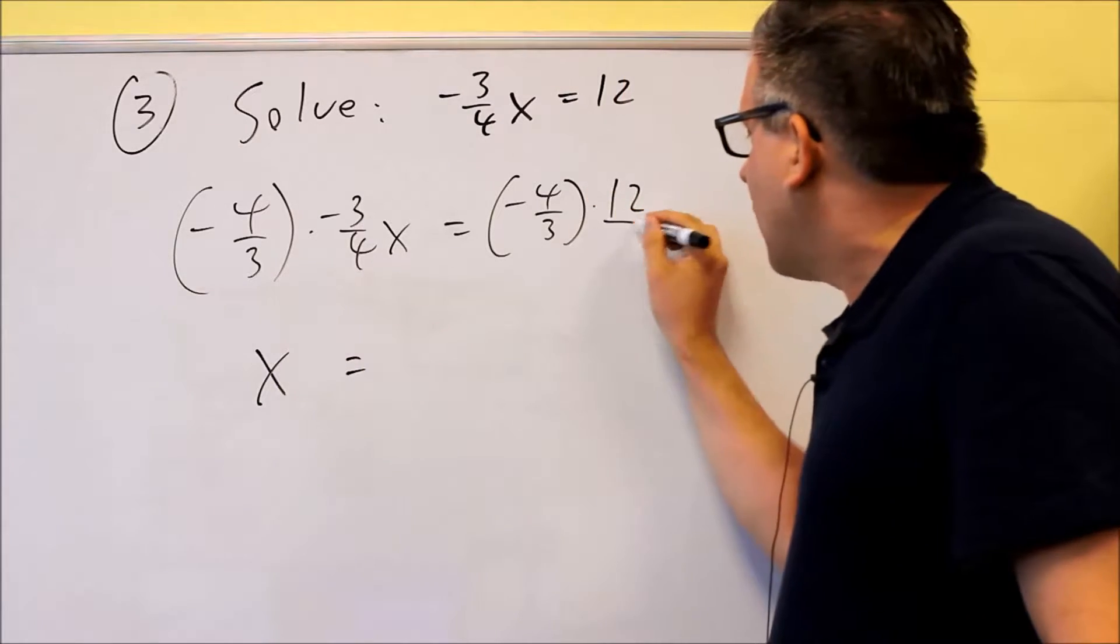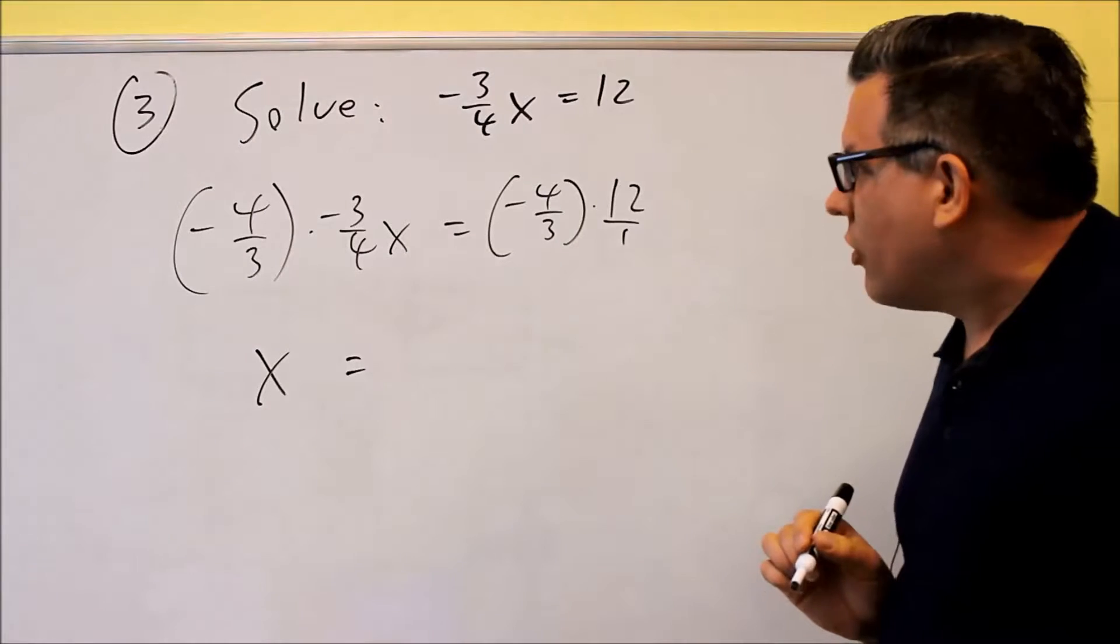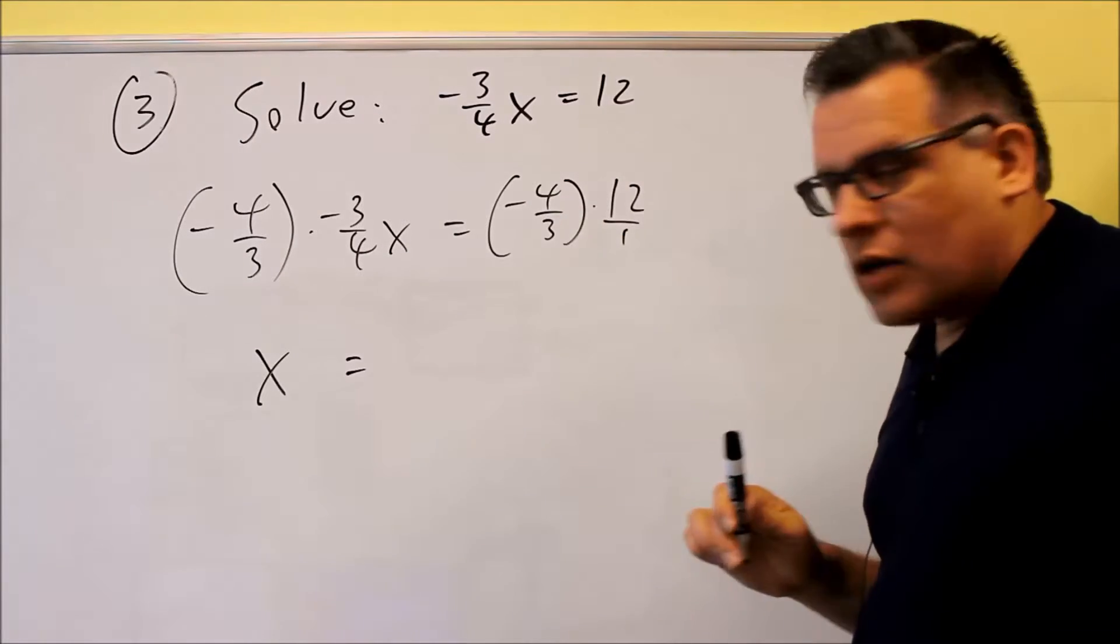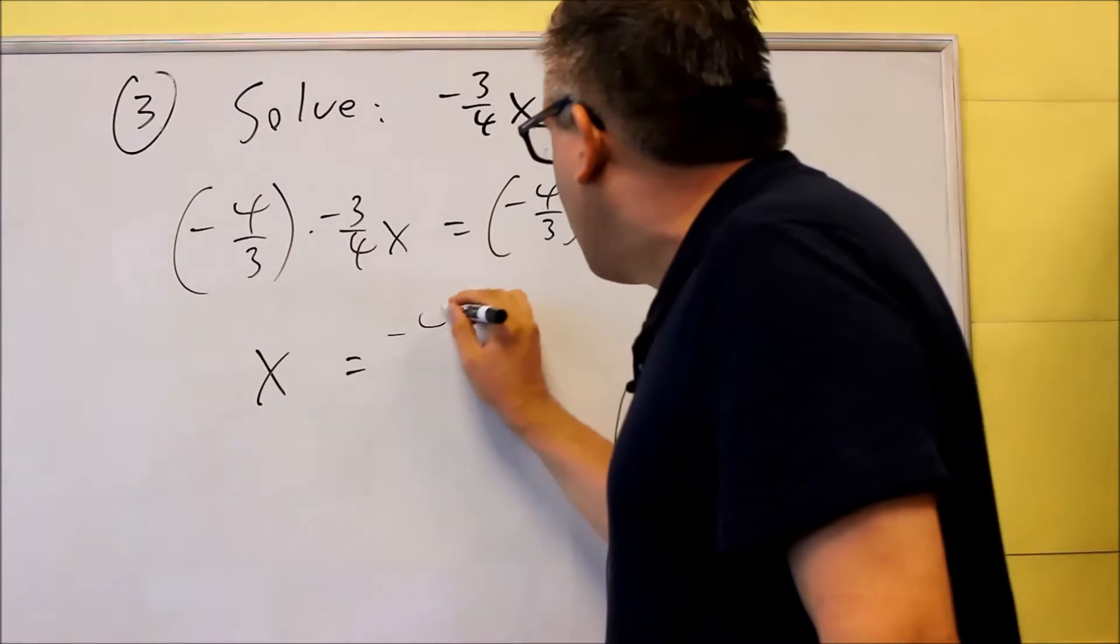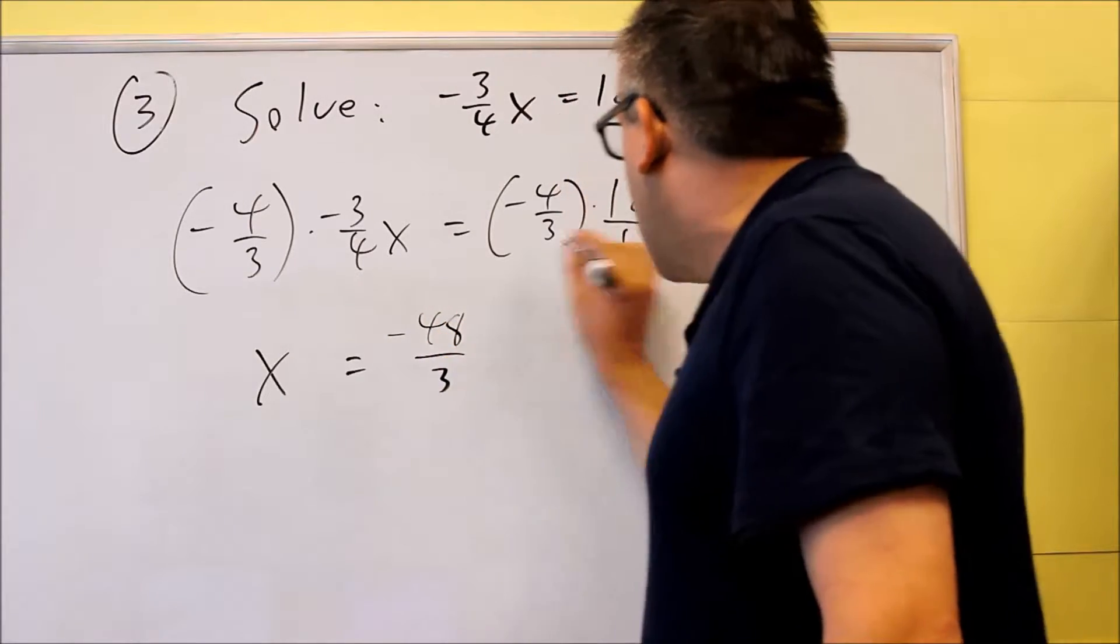When you do the one side, you have to do the other side as well. So over here, we're going to multiply across the top, across the bottom. Across the top, we're going to get negative 48, and then on the bottom, we get 3.